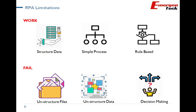Number 2: RPA only works for processes that have rule-based activity. When I say rule-based, it's binary — yes or no — but when it comes to cognitive ability, RPA fails. Number 3: Last but not least, it only works for simple processes, but when it comes to very large, very complex processes, RPA is not a good candidate.